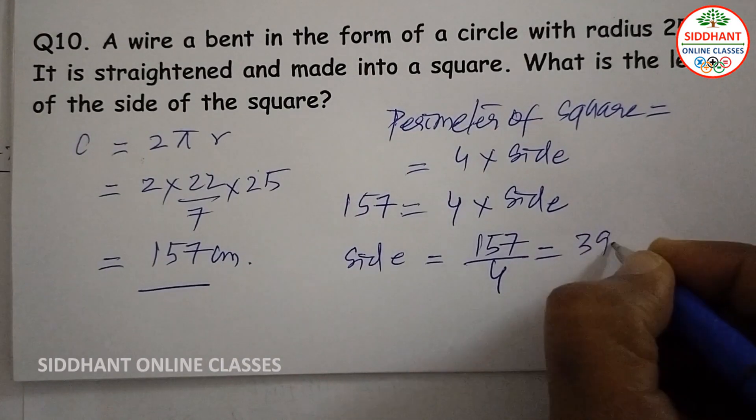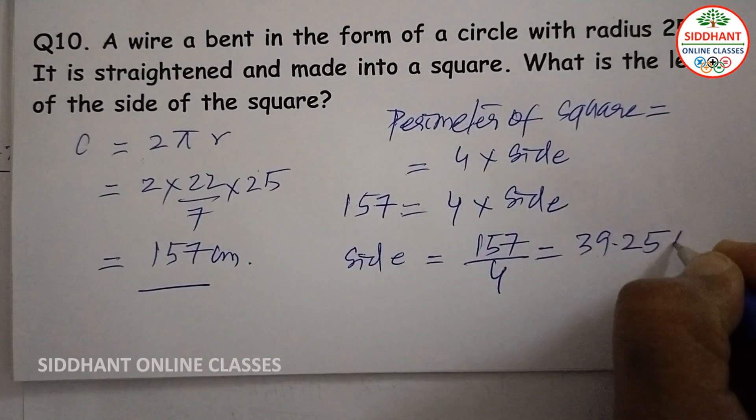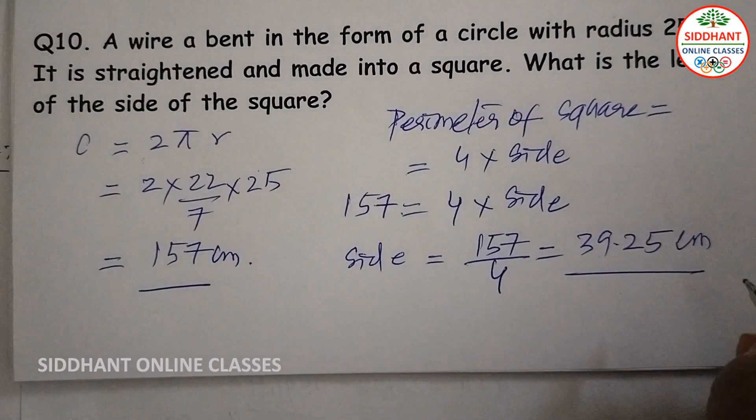So when you divide we get the side equals 39.25 centimeters.